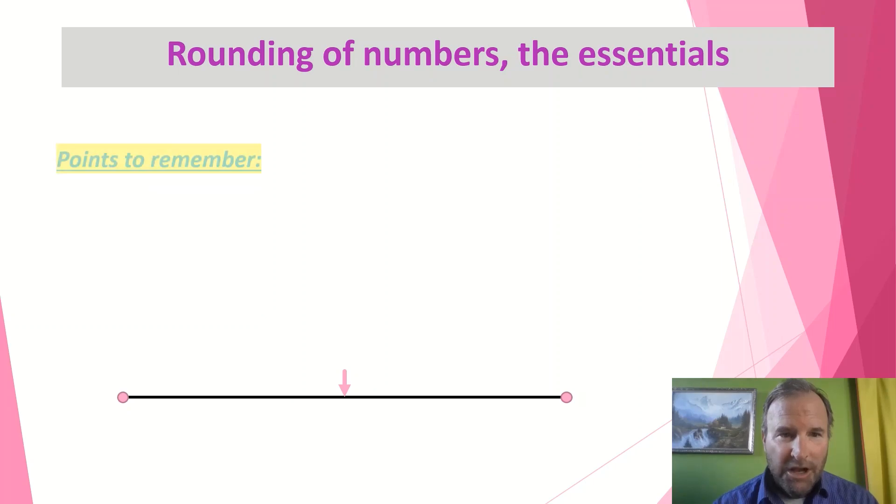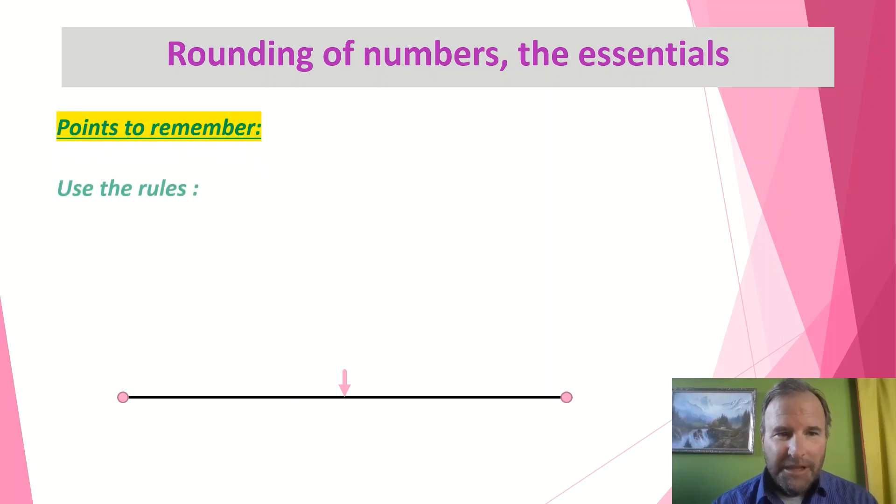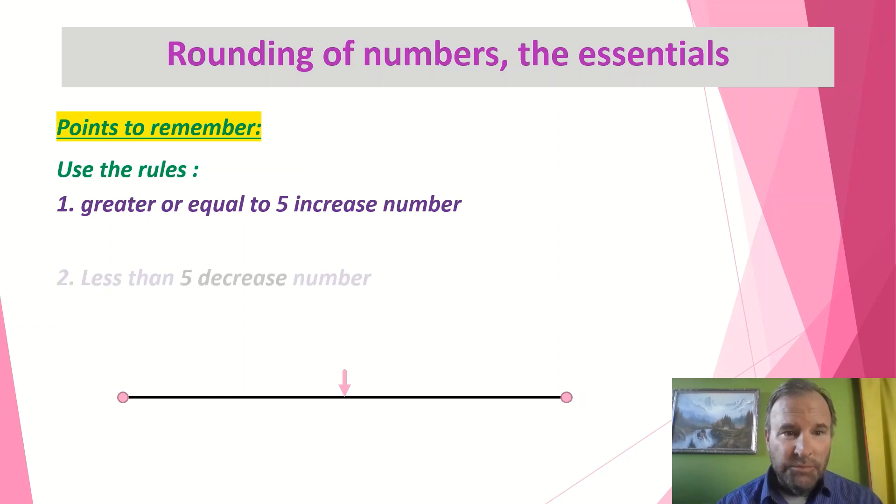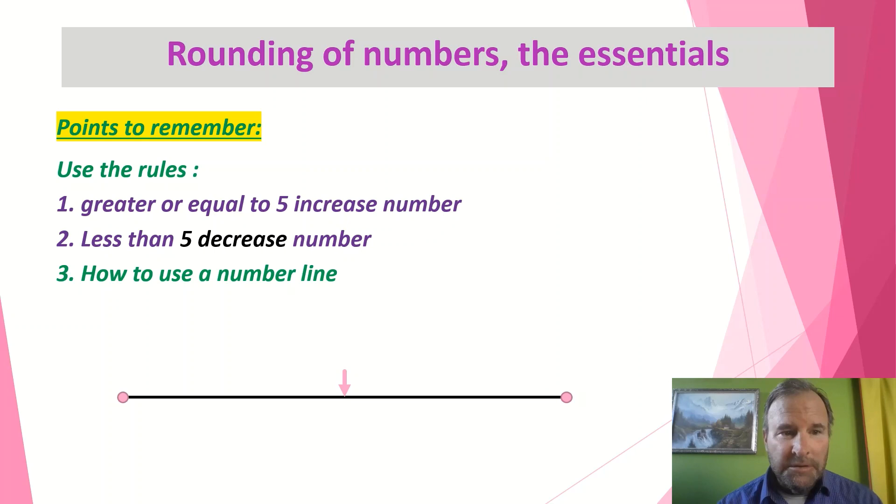Okay, points to remember: using the rules. Greater or equal to 5, increase the number. So depending what type of number it is, it could be 50, it could be 500, could be 5,000, but that's the generalized rule we have in math. Less than 5, decrease the number. Again, less than 50, less than 500, whatever the case may be.